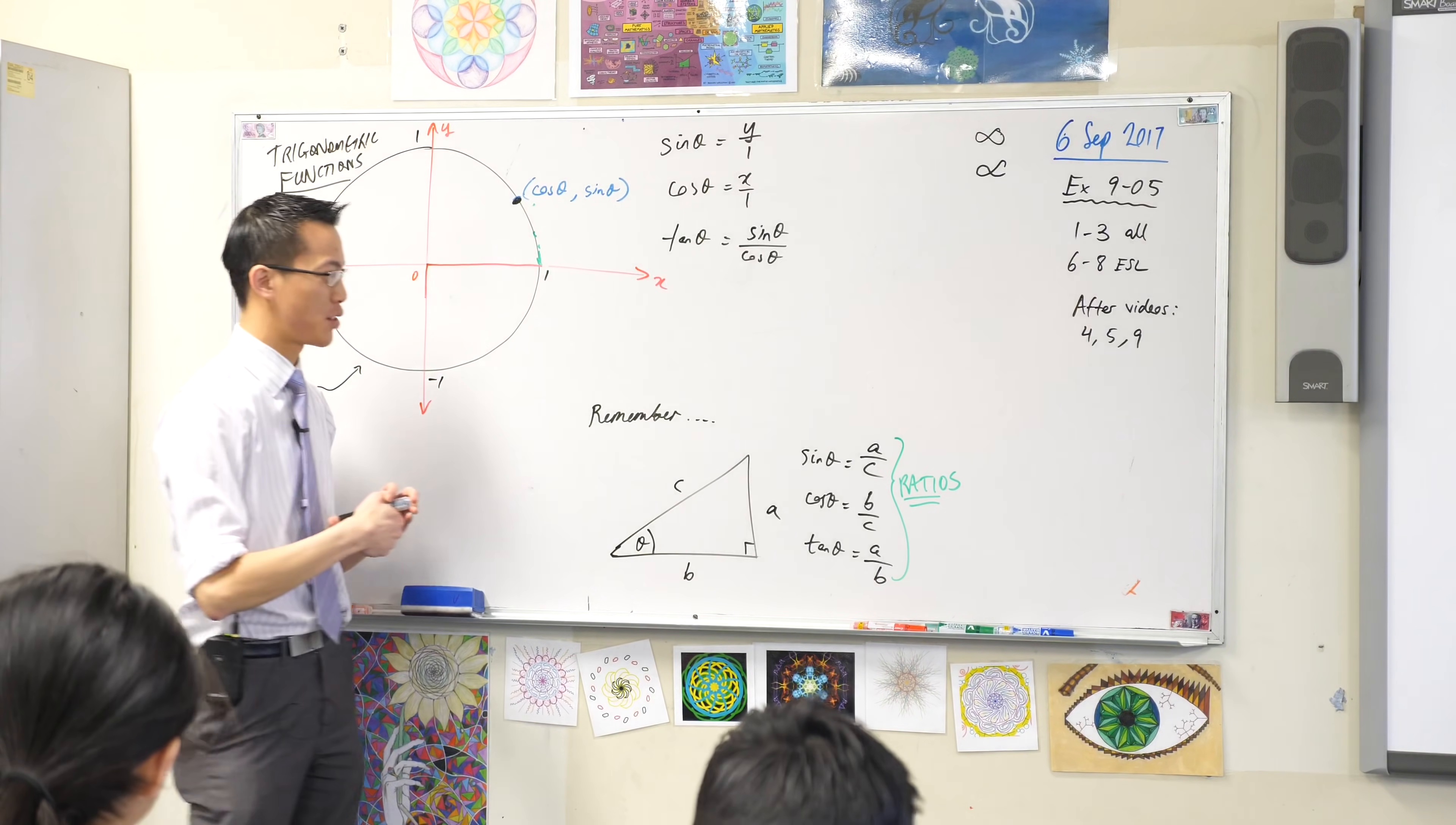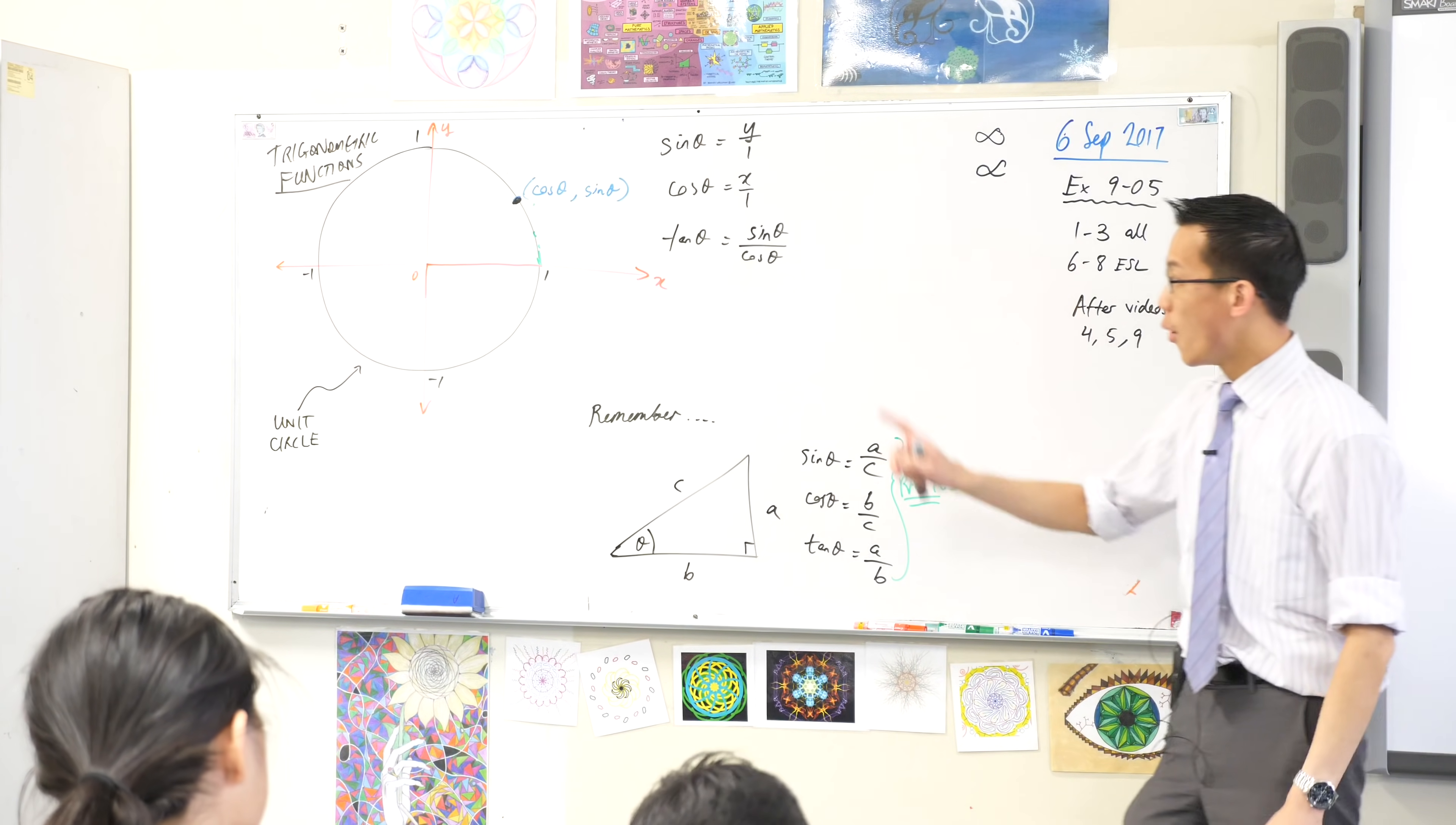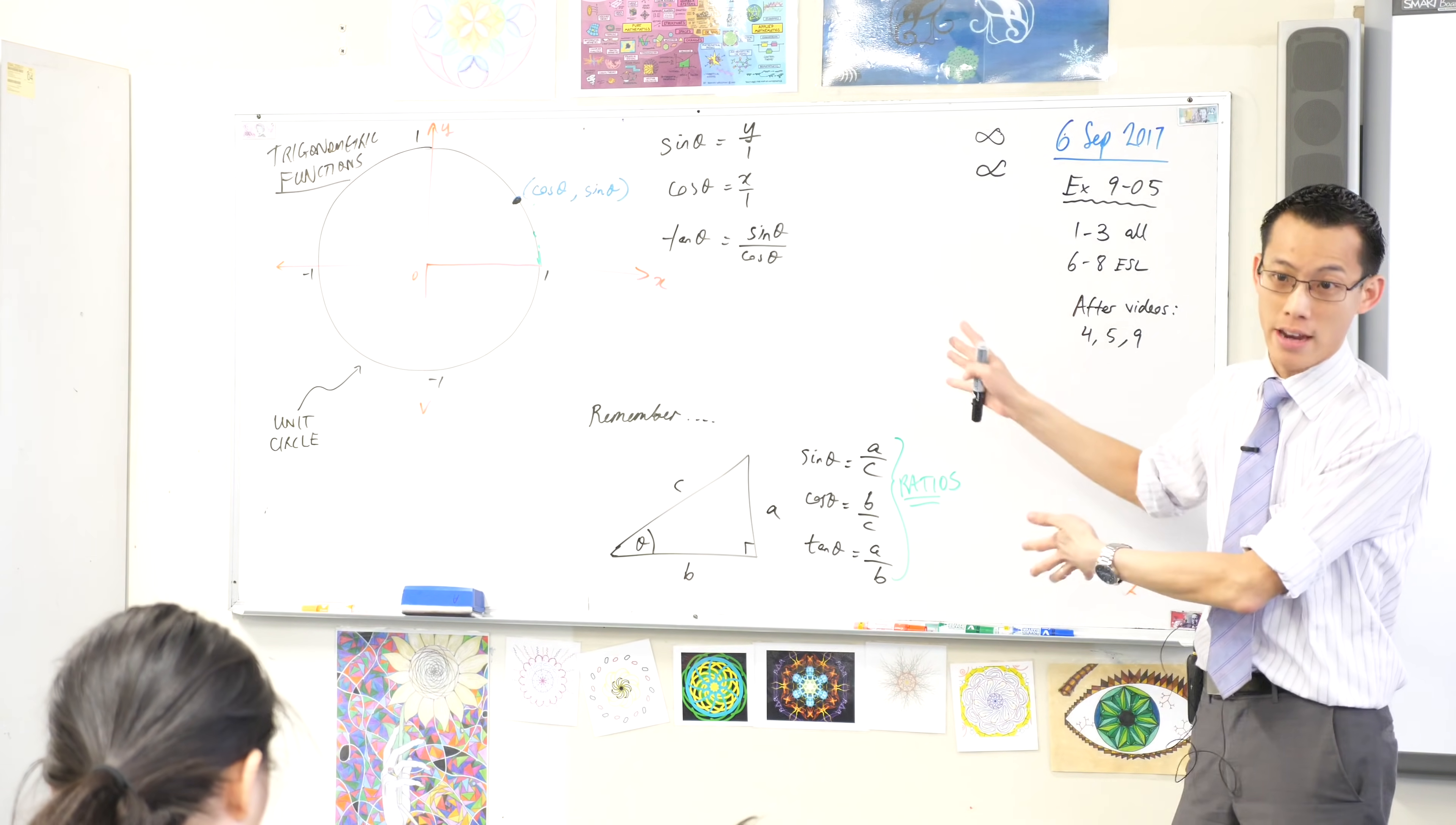Now we're going to redefine sine, cos, and tan. We're not thinking about them in terms of a triangle anymore. We're thinking of them in terms of the unit circle. So I'm going to say this definition. You can start writing it, but I will write it as well.